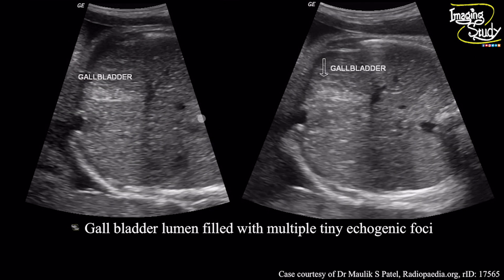Here is another picture of the gallbladder showing the hyper-echogenic material-filled gallbladder. There is no posterior acoustic shadow, which may make you confused about whether there is gallstone or this is gallbladder sludge. We can confirm it with color Doppler for twinkling artifacts.